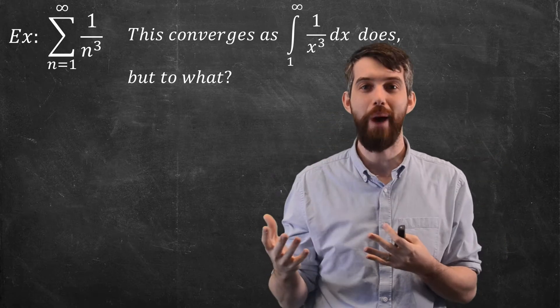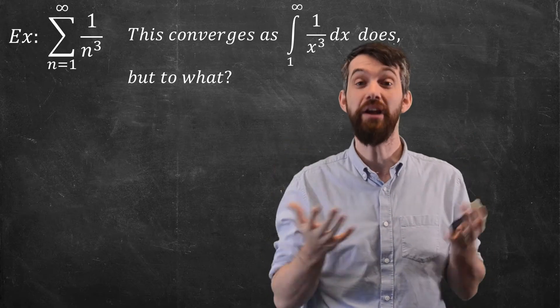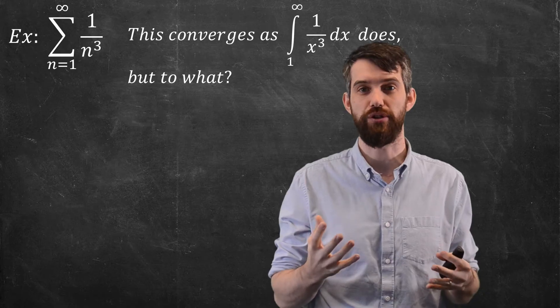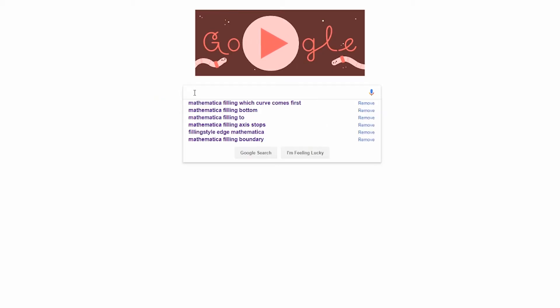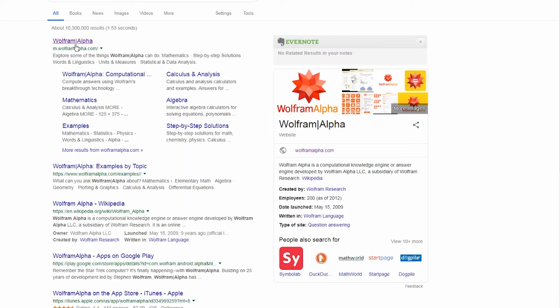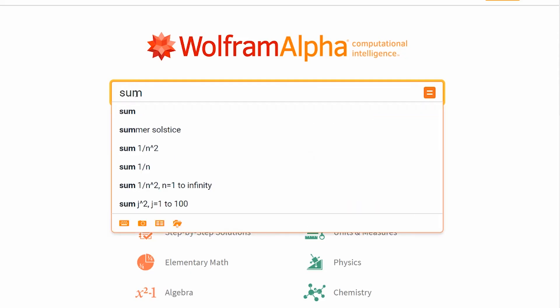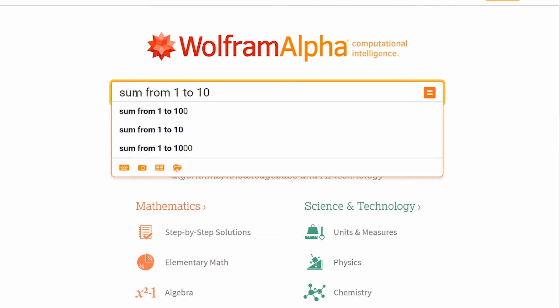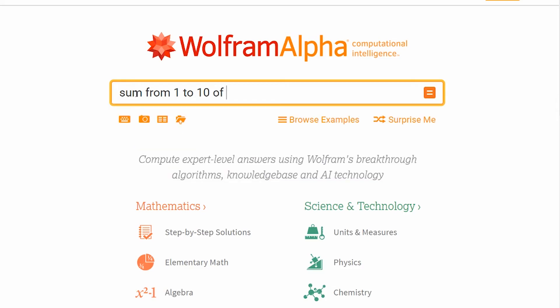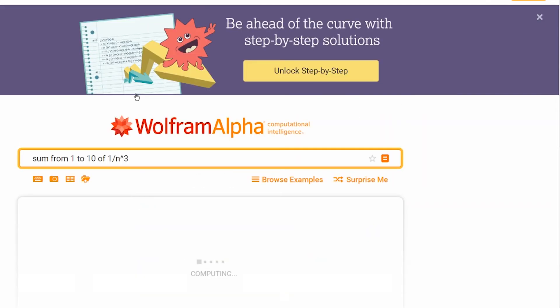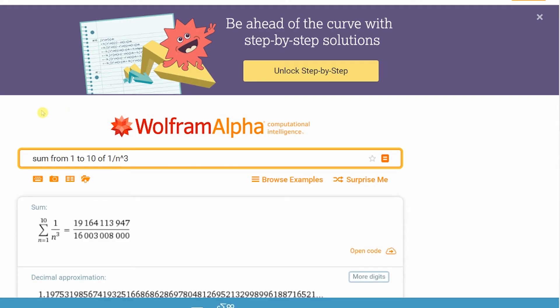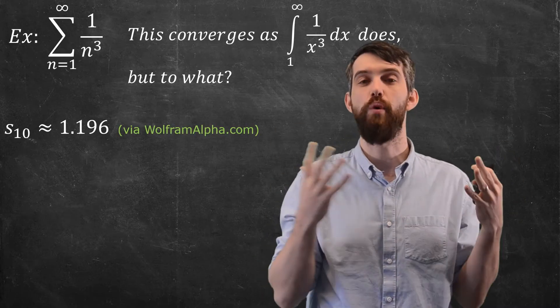Let's suppose we compute the value of S10. We're going to compute manually via a calculator, via a computer, the 10th partial sum. To compute S10, I'm going to go to a very useful website, WolframAlpha, a calculator on steroids that interprets what you say in a relatively clever way. We want to do the sum from 1 up to 10 of 1 over n cubed. I hit enter, and it spits out that the value is approximately 1.196. So S10 is approximately 1.196.